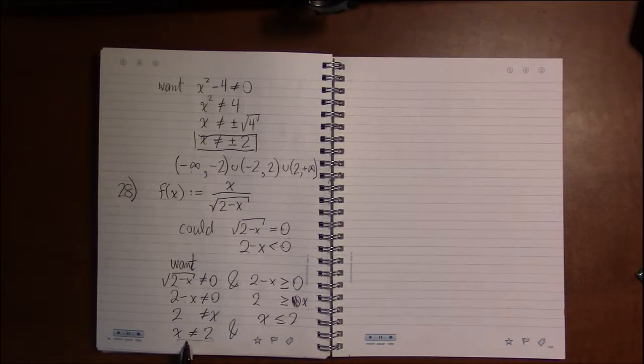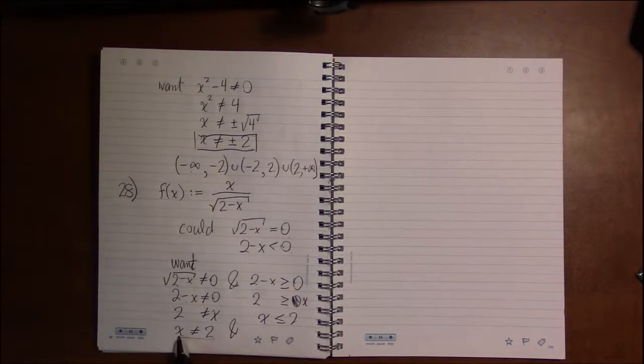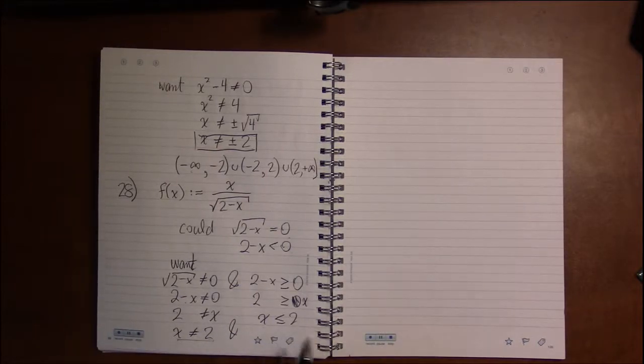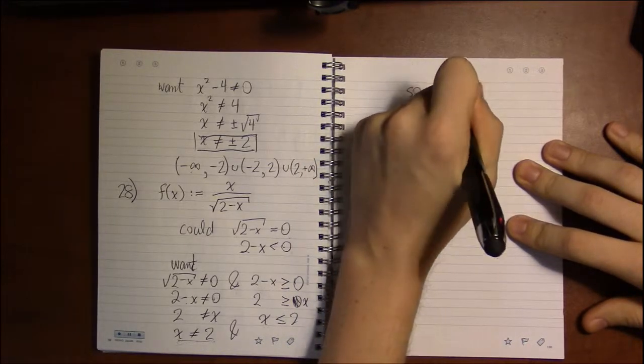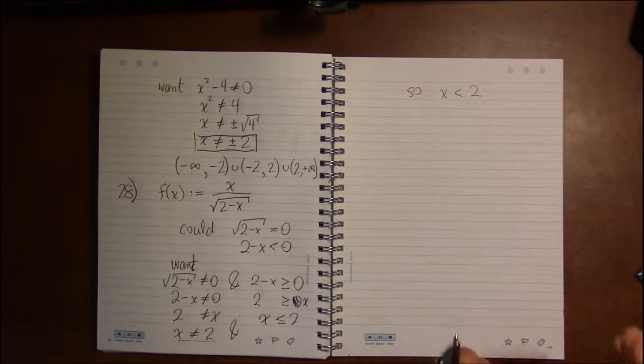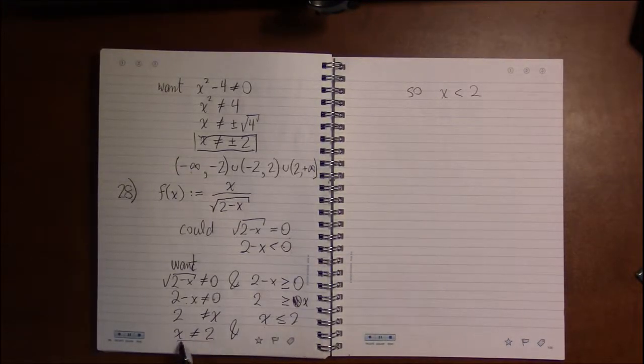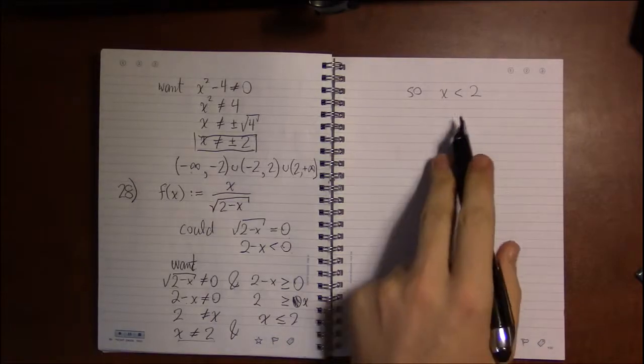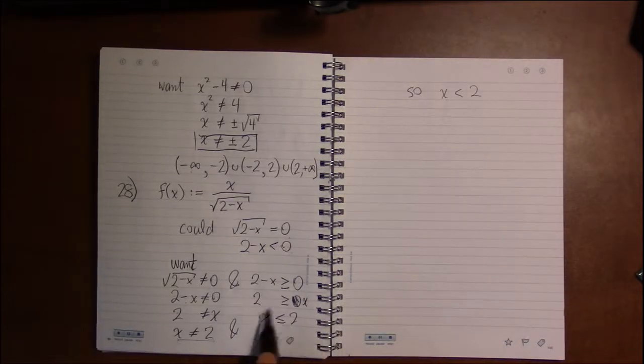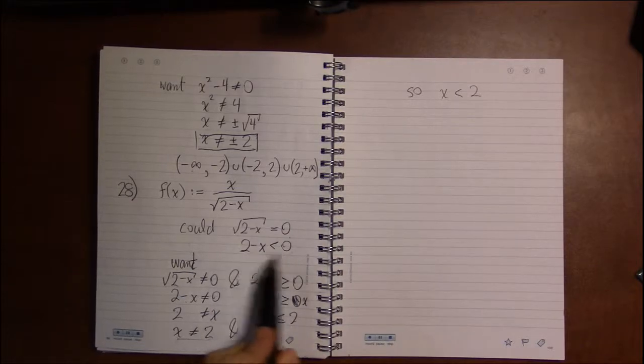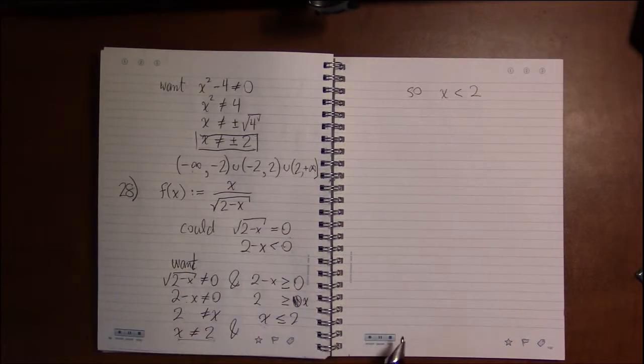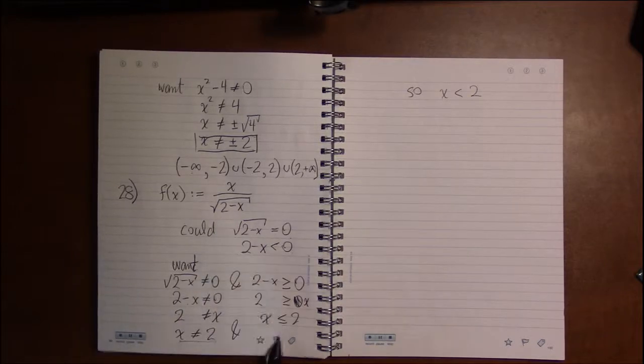So what do we have? If x can't be 2, then x has to be less than 2. That's our only option, because we can't have x be equal to 2. X can't be greater than 2 because of this - if x is greater than 2, then we're going to run into trouble with taking square roots of a negative. That's what this work showed us.